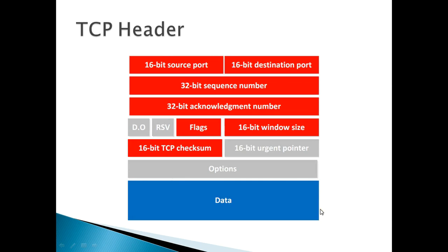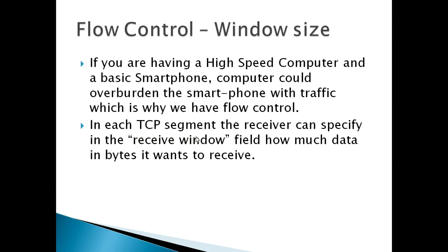The UDP header is very simple. You can see the source port number, destination port number, checksum, size, and data. In TCP, you can see the sequence number and acknowledge number, which are used in the 3-way handshake process.